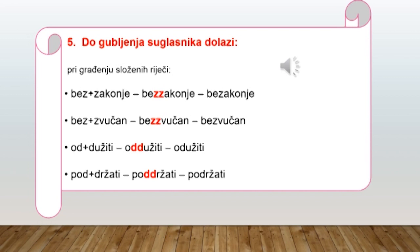Do gubljenja suglasnika dolazi i prilikom građenja složenih riječi. Evo na primjer kako su nastale riječi bezakonje, bezvučan, odužiti, podržati.